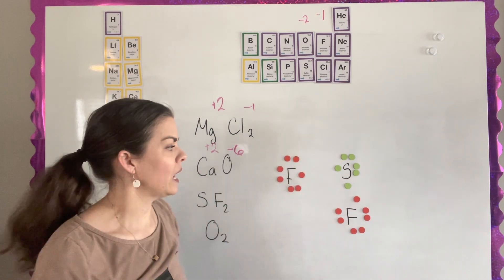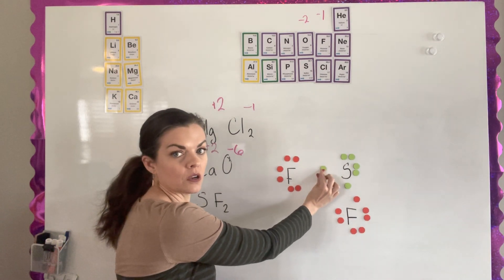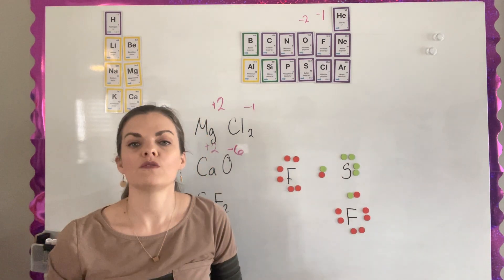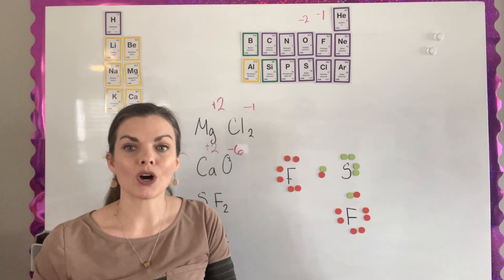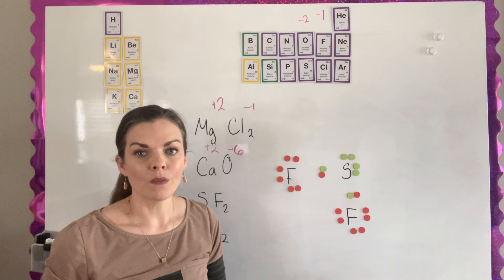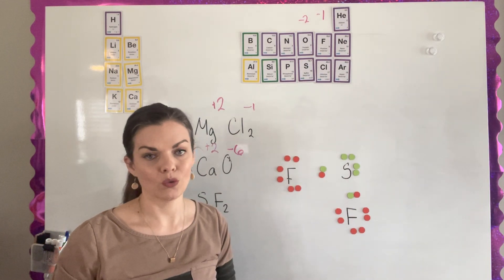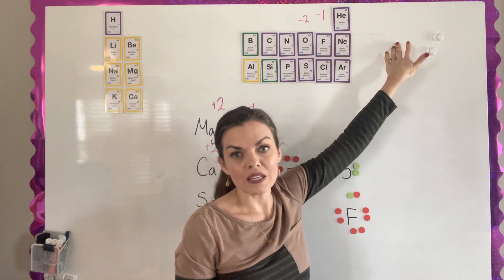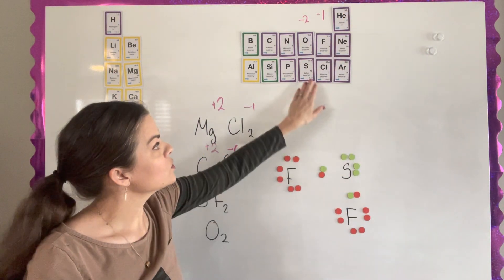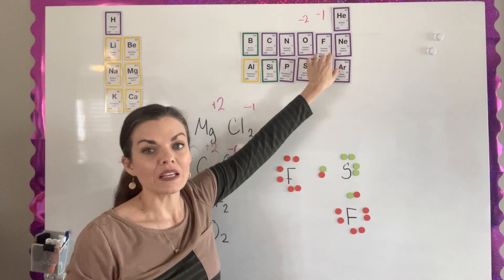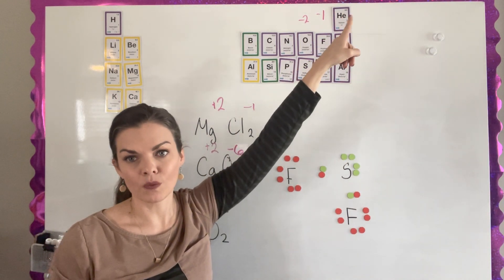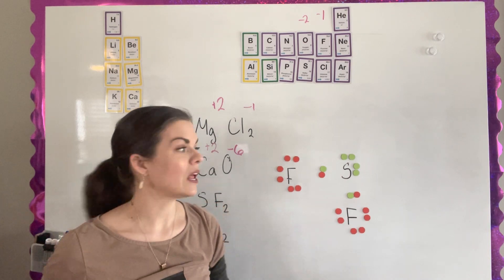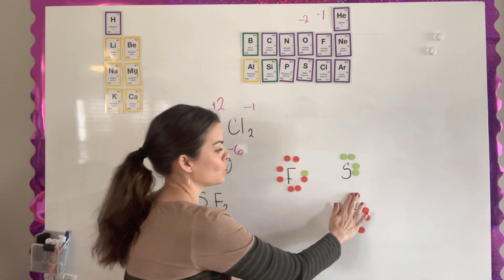Since it's a covalent compound, one of the fluorines and one of the sulfur electrons make a bond, and the same happens on the other side. If you remember from our chapter on the periodic table, we had a term called electronegativity — how hard an element pulls electrons to it. The most electronegative elements are toward the right and upper side of the periodic table. Fluorine is further toward that corner than sulfur, so fluorine is more electronegative and will pull those electrons toward it.